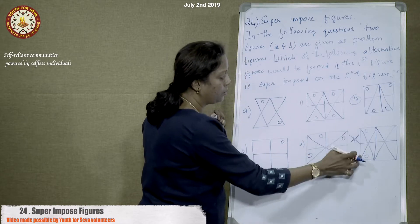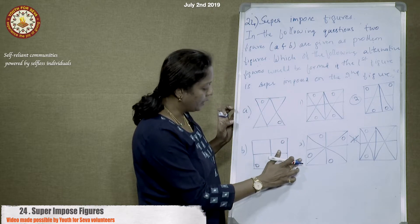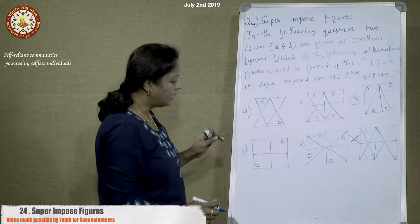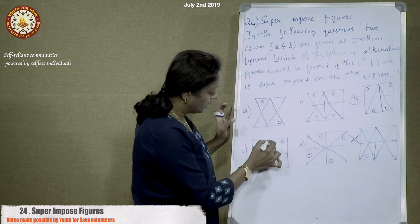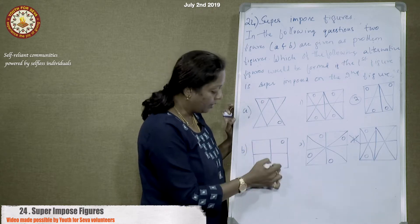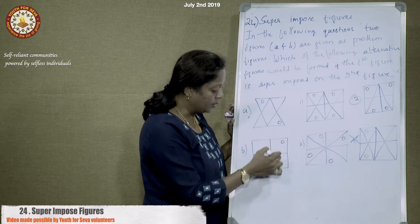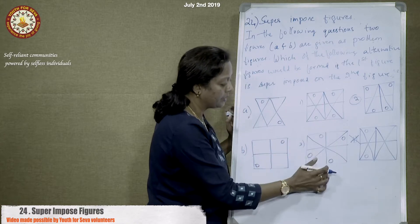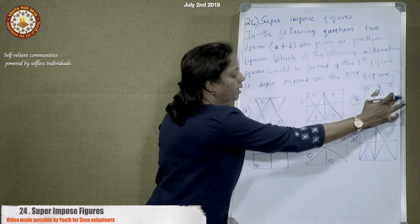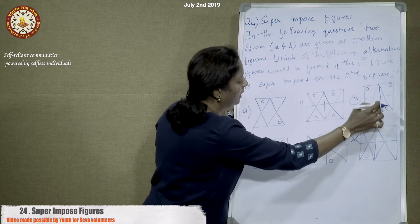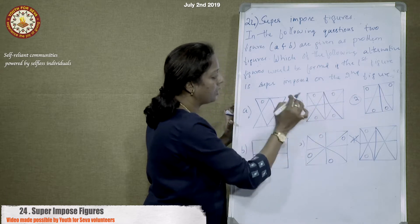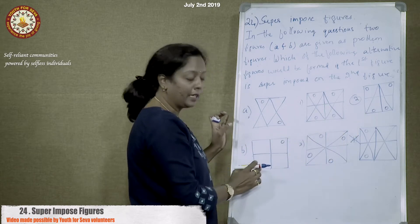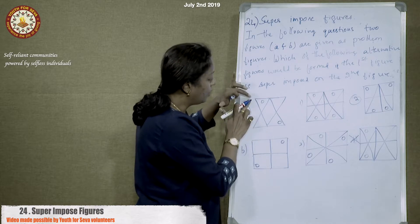The remaining options all show four circles, so we look further. In figure B there are two straight lines — one vertical and one horizontal. Checking the remaining three options, all of them have a vertical and a horizontal line, so we cannot eliminate any option on this basis alone.